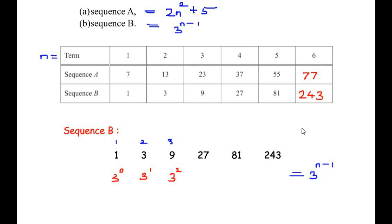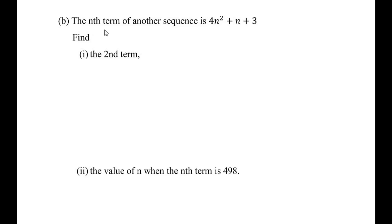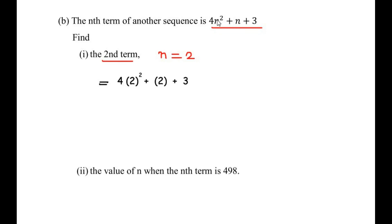Moving on to the next question: the nth term of another sequence is 4n² + n + 3. We need to find the second term. Since we want the value when n = 2, we substitute: 4 times 2² plus 2 plus 3 equals 4 times 4 plus 2 plus 3, which is 16 plus 2 plus 3, giving us 21. The second term is 21.